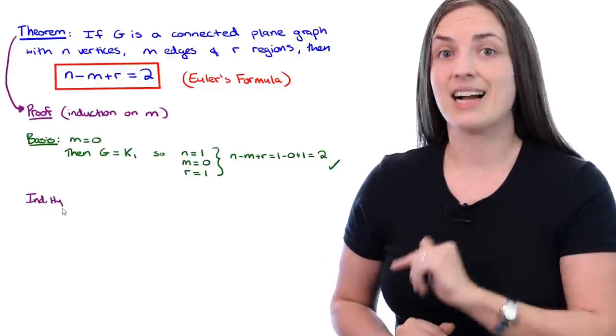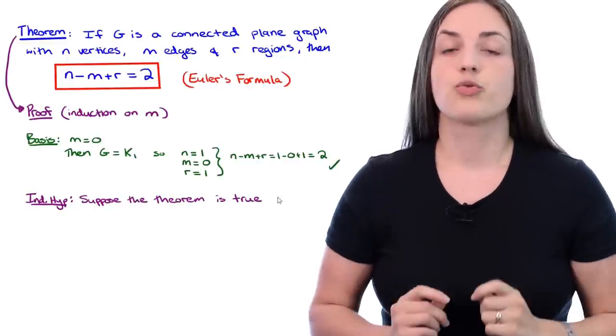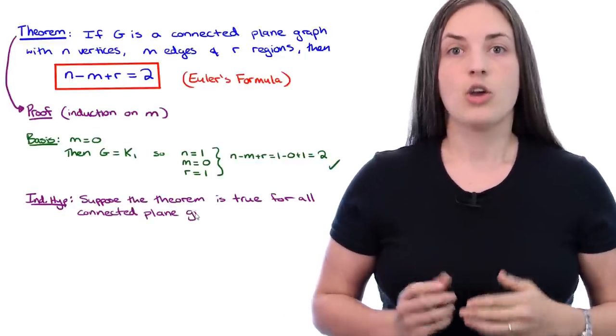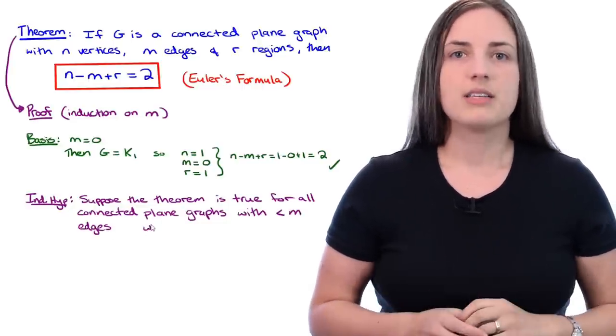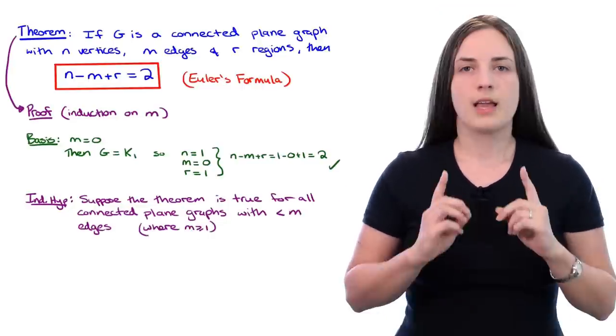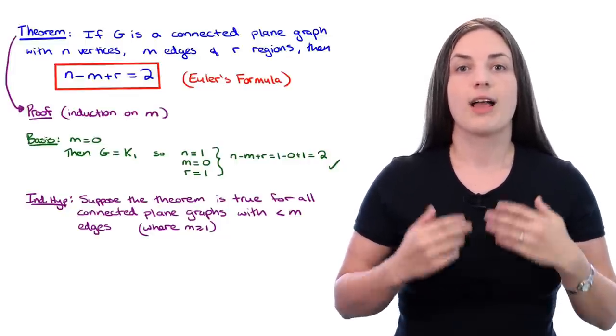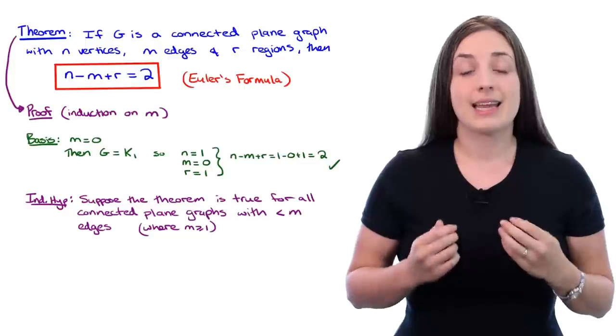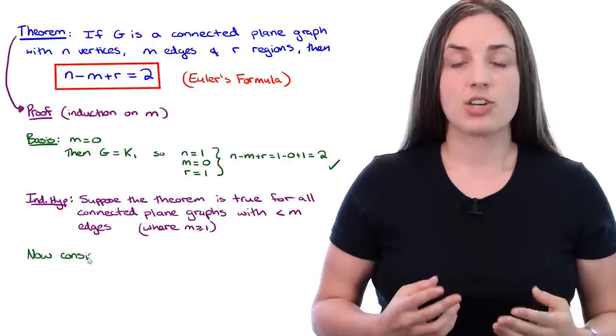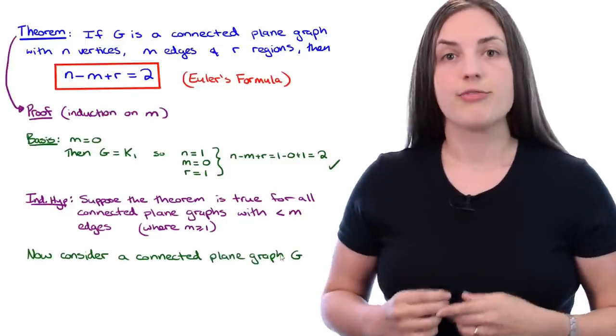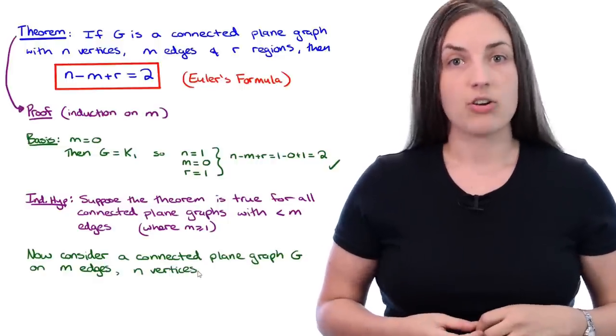Next we make the inductive hypothesis. Suppose that the theorem is true for all connected plane graphs with fewer than M edges, where M is something bigger than or equal to one. Next we need to use the inductive hypothesis to show that the theorem will hold for any connected plane graph on M edges.